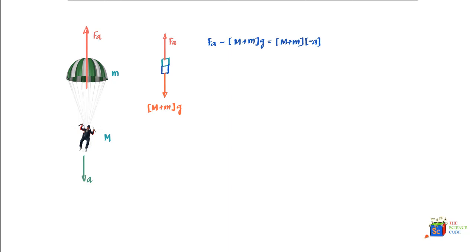Solving for F_A from this equation, we get F_A = (M + m)(G − A).